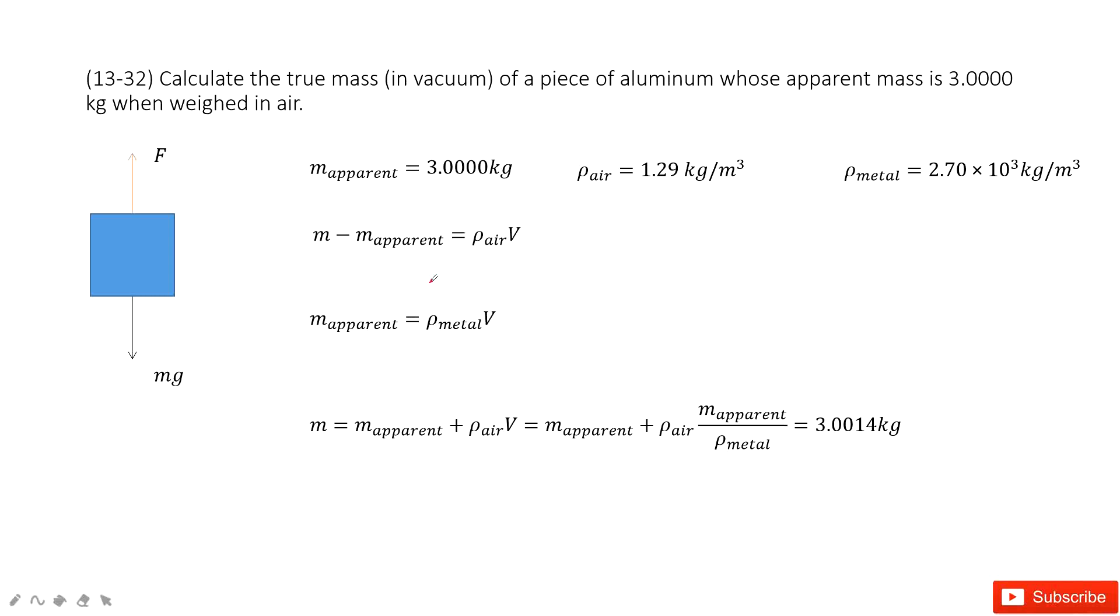And then, how can we determine the mass, this V, the volume? So this V, we can use the apparent mass over the density of the aluminum.